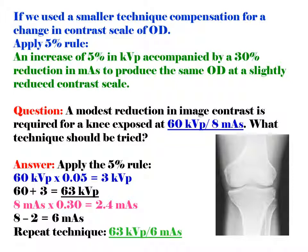Question: A modest reduction in image contrast is required for a knee exposed at 60 KVP, 8 MAS. What technique should be tried?